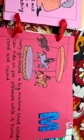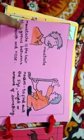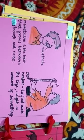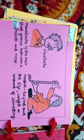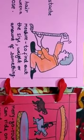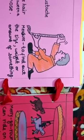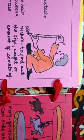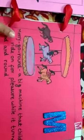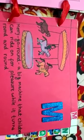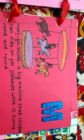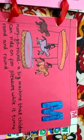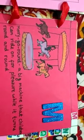The next alphabet is M. The first word from M is mustache. Mustache is the hair that grows between a man's mouth and nose. The second word is measure, to find out the size, weight or amount of something. And the third word is merry-go-round. It is a big machine that children can ride on for pleasure while it turns round and round.